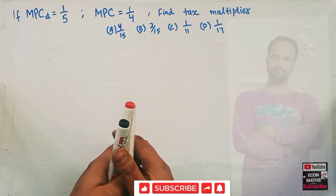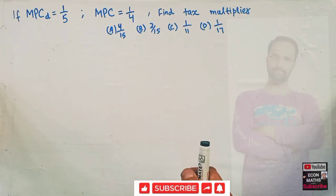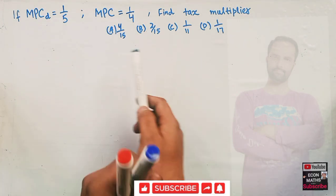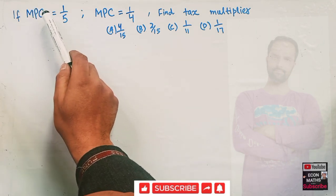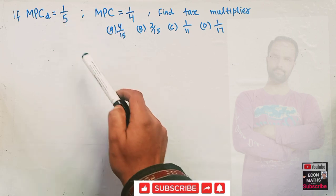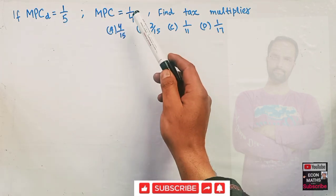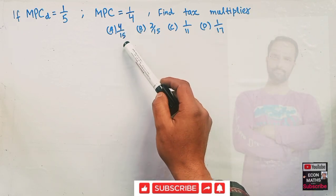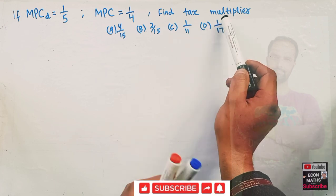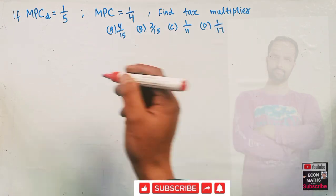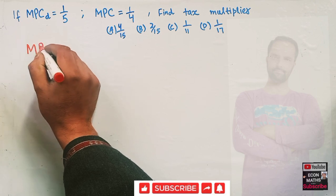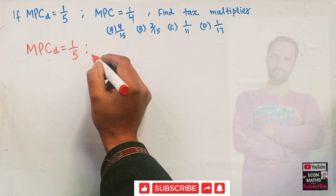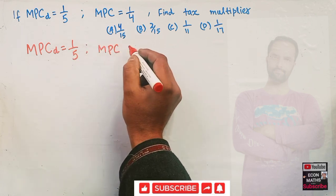In this video we will try to find out the tax multiplier from the given marginal propensity to consume of disposable income and marginal propensity to consume of total income. The question is: if MPCD (marginal propensity to consume of disposable income) is equal to 1/5, and marginal propensity to consume of total income is equal to 1/4, find the tax multiplier.